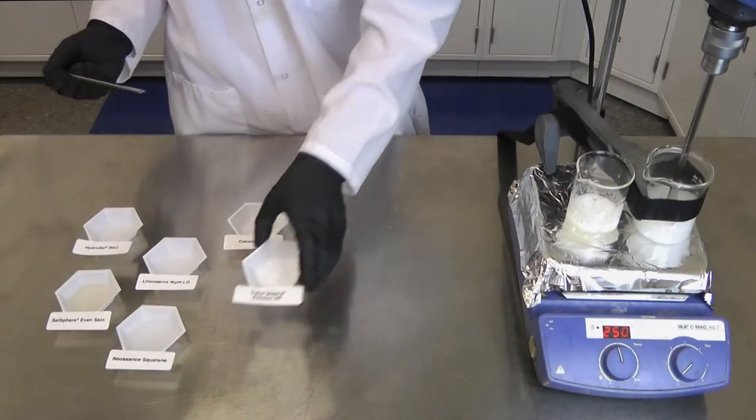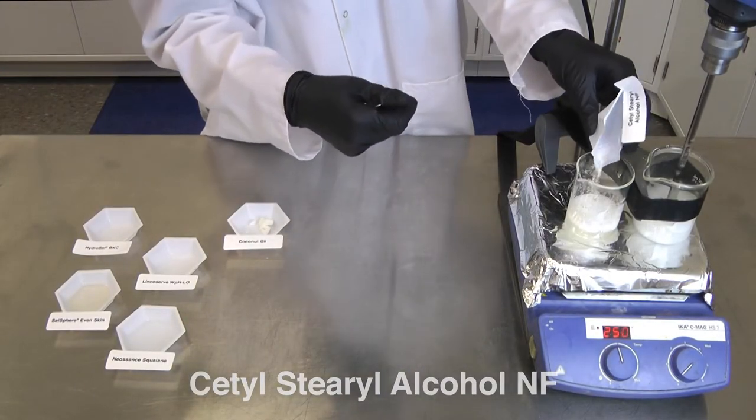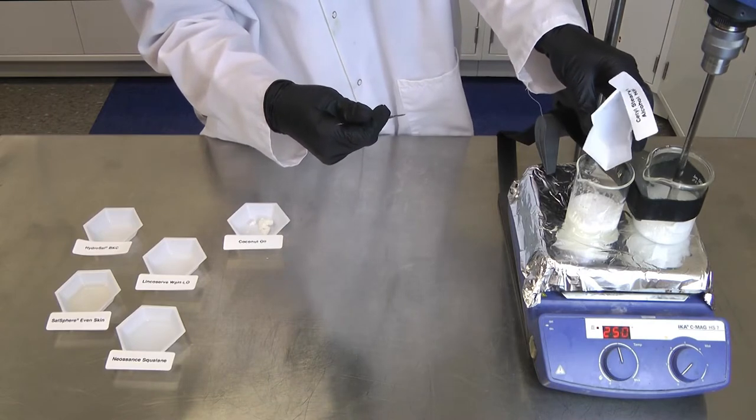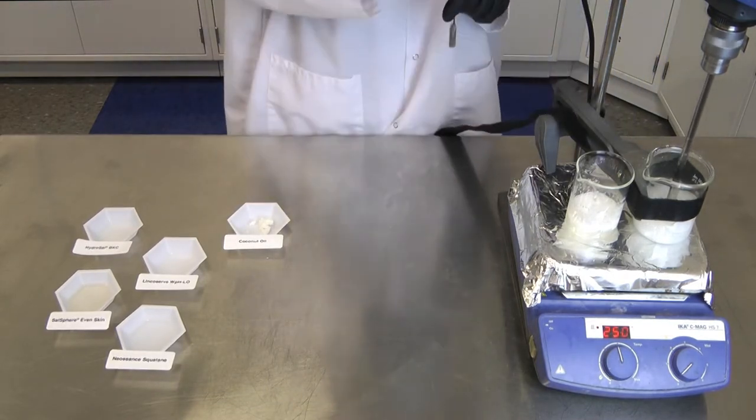The next ingredient that we will be adding is cetearyl alcohol. This can also be known as cetyl alcohol. This emollient will help to soften the skin and will also help to stabilize our final product.